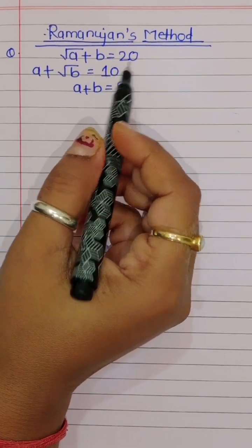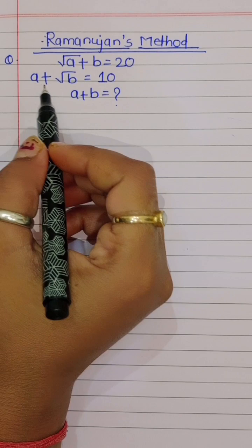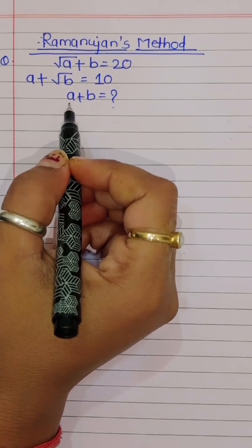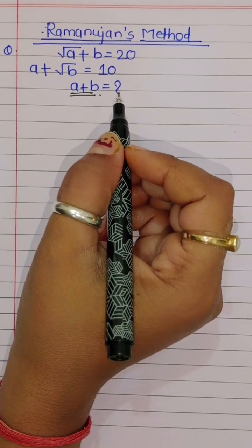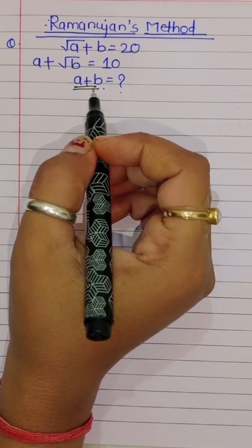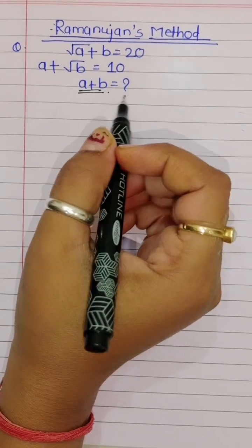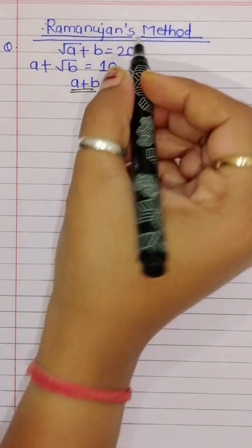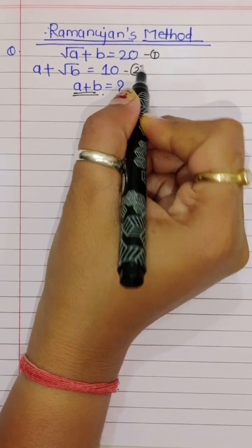Given: square root of (a plus b) is equal to 20, and a plus square root of b is equal to 10. We have to find the value of a plus b. We can use Ramanujan's method for this question. This is equation 1 and this is equation 2.